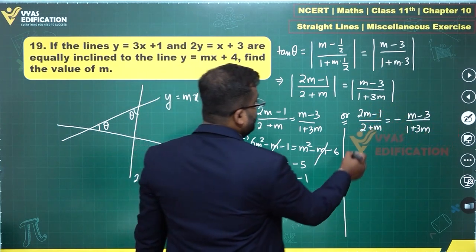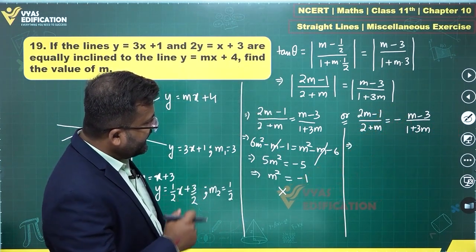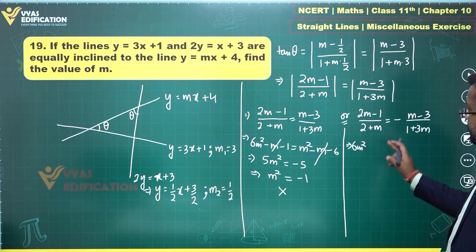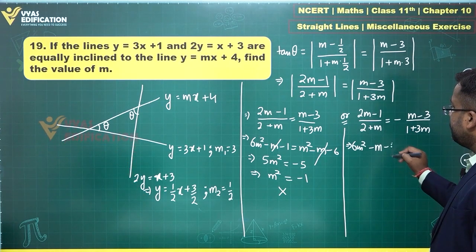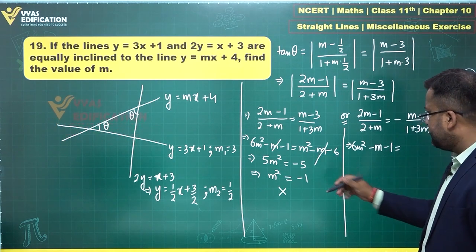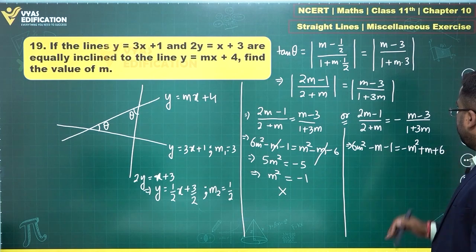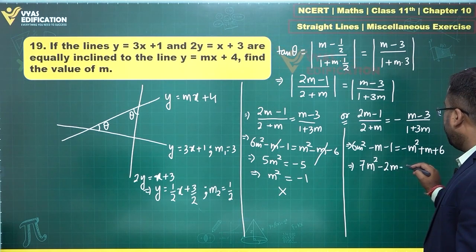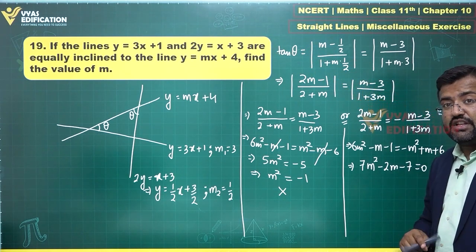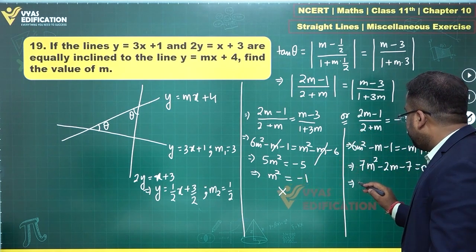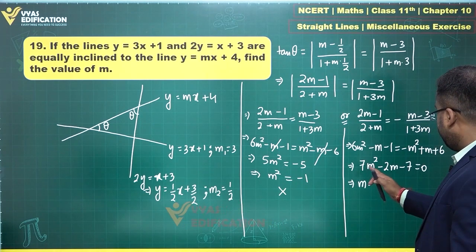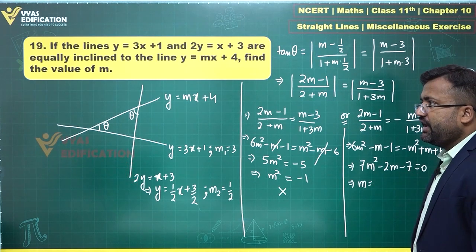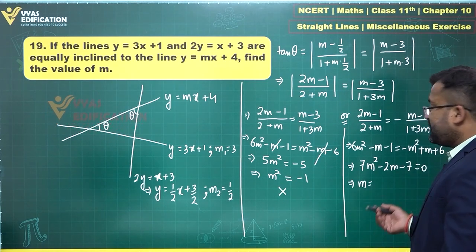For Case 2, with the extra minus on the right side: the left side gives 6m² − m − 1, and the right side gives −(m² − m − 6) = −m² + m + 6. Combining: 7m² − 2m − 7 = 0. The discriminant check shows this cannot be factorized, so we use the quadratic formula.